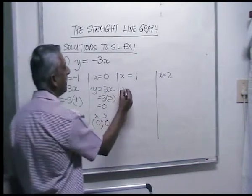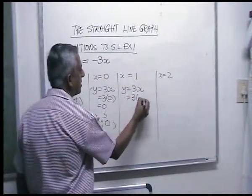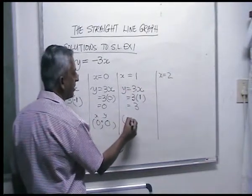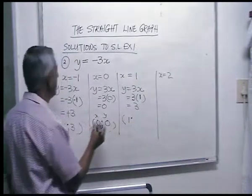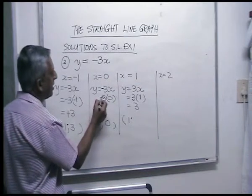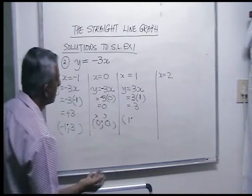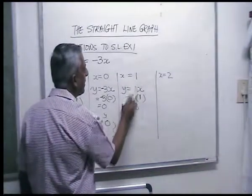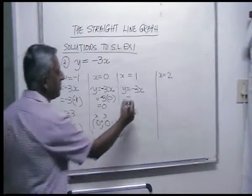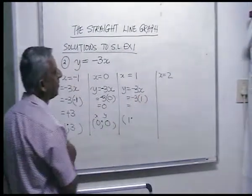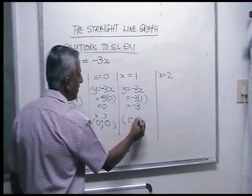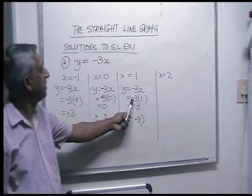For x is one: y is equal to minus three times one. Sorry — this should be minus three x. So minus three times one is minus three. Your ordered pair is one, minus three. Be careful of the signs.